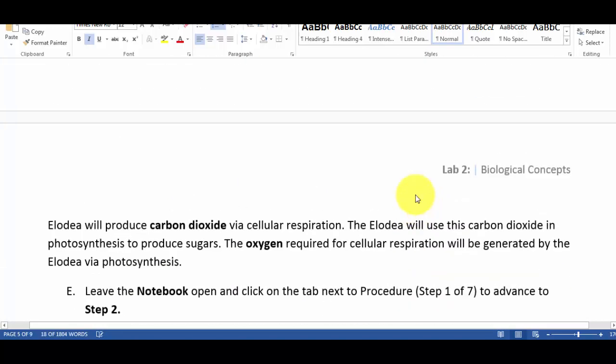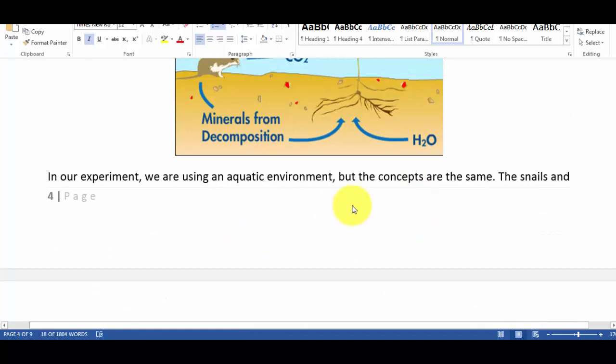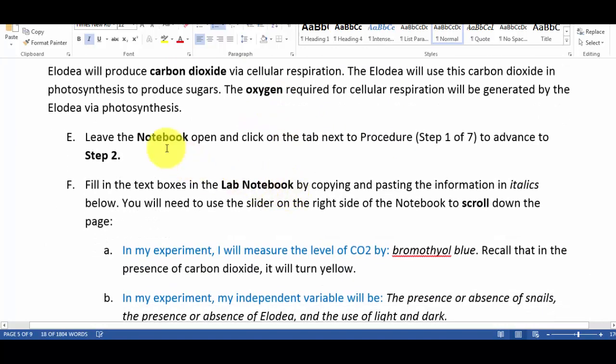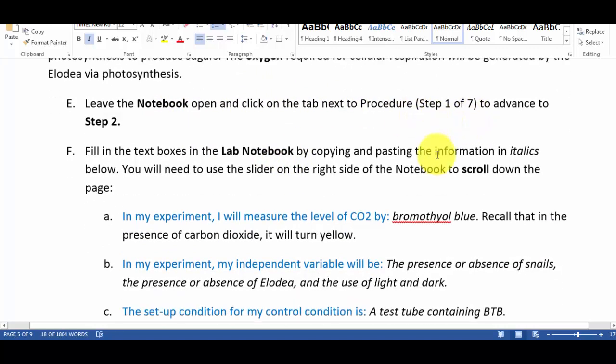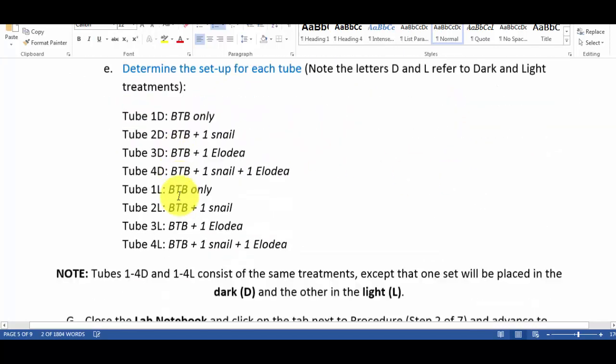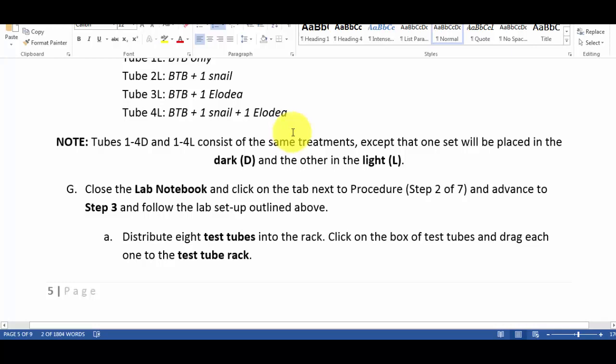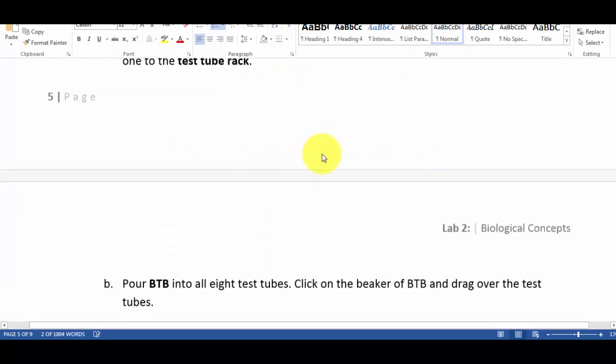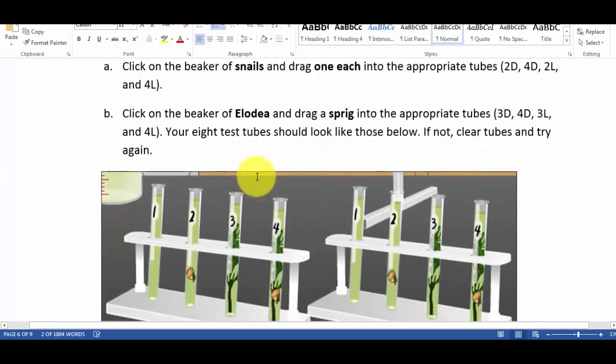It says in our experiment using an elodia plant and snails, snails produce carbon dioxide, elodia produce oxygen. Leave the notebook open and click the tab next to procedure 1 through 7 to advance to step 2, then fill in the text boxes. You can just copy and paste them right here. Copy all the italicized words, the numbers. Set up the tubes the way you want to, close the lab notebook, and then follow the instructions from there. It's pretty self-explanatory.